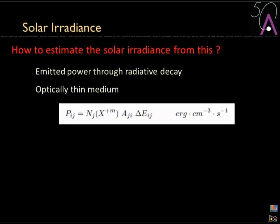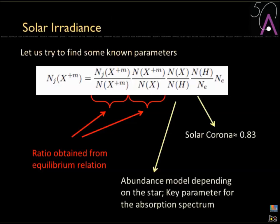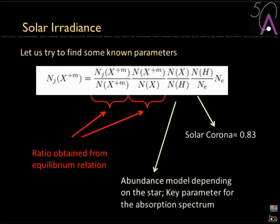Now, how do we estimate irradiance from this? We try to find a way to estimate the emitted power through radiative decay within an optically thin medium. The power will be the number of excited or ionized ions in this particular state, multiplied by the Einstein coefficient and the energy difference between the two states. The ions are integrated over the line of sight on top of the solar atmosphere, and that gives the solar radiance measurable from Earth.